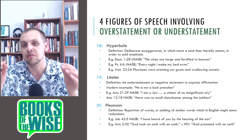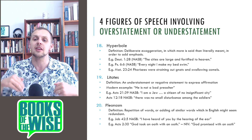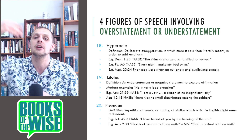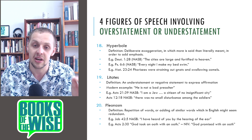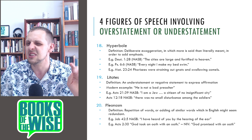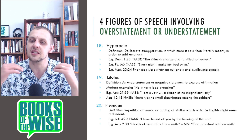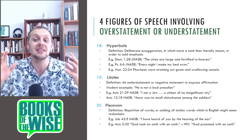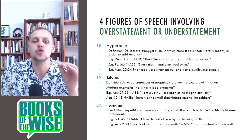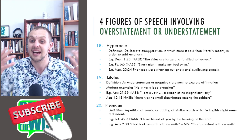The next figure of speech is litotes: an understatement or negative statement to express affirmation. You're understating something to show something positive. For example, in modern English: he is not a bad preacher — understating that he is actually a good preacher. Acts 21:39: I am a citizen of no insignificant city — actually meaning a very significant city, Rome. Acts 12:18: there was no small disturbance among the soldiers — meaning there was a big disturbance. So it's an understatement.